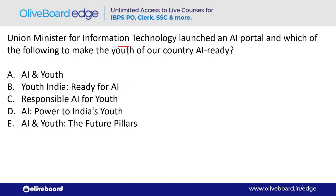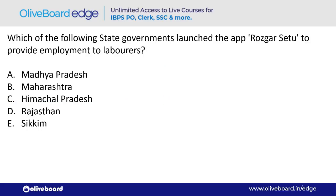The Union Minister for Information Technology launched an AI portal to make the youth of India AI-ready. Which portal was launched? The answer is 'Responsible AI for Youth' — option C.